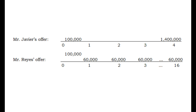Mr. Javier plans to pay ₱100,000 initially at time equals zero, and then an additional ₱1,400,000 as a lump sum by the end of the 4th year. The diagram further shows that Mr. Reyes wants to pay initially the same amount ₱100,000, and then 4 times a year he will pay ₱60,000, doing it for 4 straight years — so he will pay ₱60,000 sixteen times in 4 years.